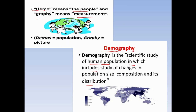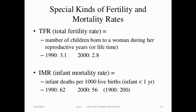The first parameter is TFR — the Total Fertility Rate. The definition of Total Fertility Rate is the number of children born to a woman during her reproductive years, which is the total lifetime age zone of women.